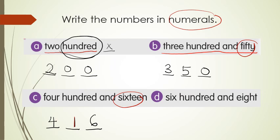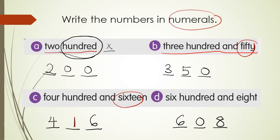Six hundred and eight. So six hundred — we put six. Six hundred and eight: if we write eight in the tens place, then we'd have to put zero after, making it eighty, not eight. So eight should be in the last position. We write zero in the tens place and eight in the ones place. So the answer is 608.